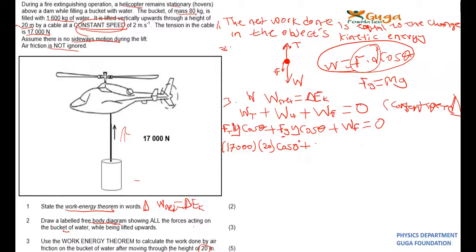Plus mg, so the mass here is 1680, you add the two masses, and then multiply by 20.